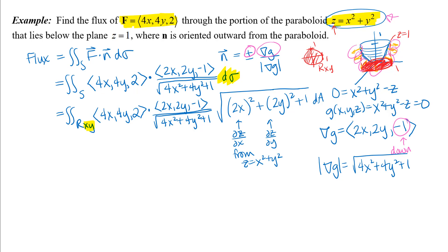Looking at this big expression, I might notice there are no Z's, so I don't have to worry about substituting. The other thing I notice is that thankfully these two radicals cancel. They both came from the equation of the surface — one was the magnitude of the gradient vector in the denominator, and the other was from the D sigma surface area differential. They will not always cancel exactly, but you should often expect some nice cancellation because of where those values came from. In this case, they cancel completely, so I can go ahead and do my dot product.